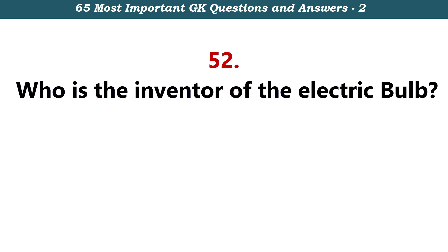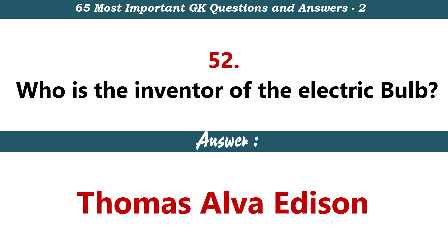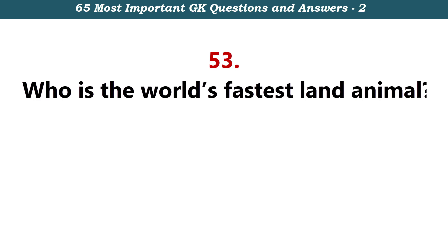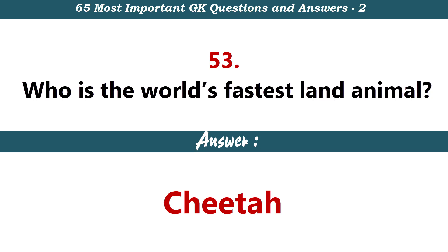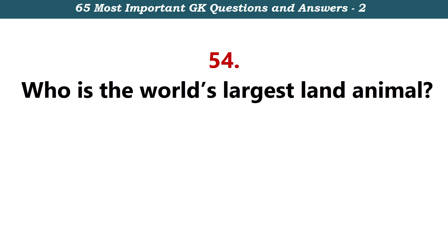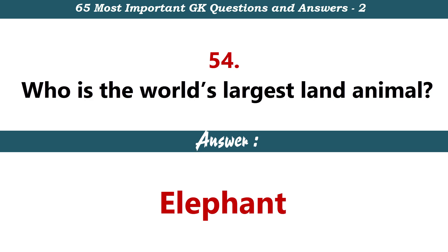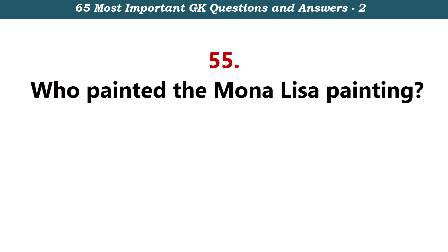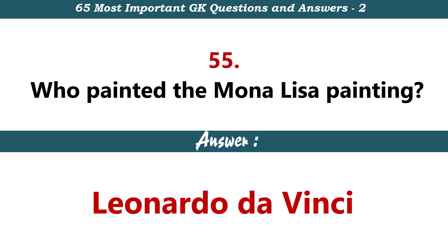Who is the inventor of the electric bulb? Thomas Elba. Who is the world's fastest land animal? Cheetah. Who is the world's largest land animal? Elephant. Who printed the Mona Lisa painting? Leonardo The Venci.